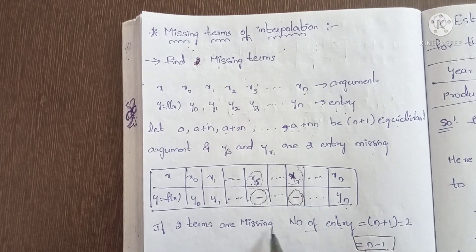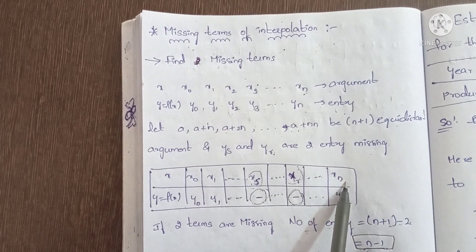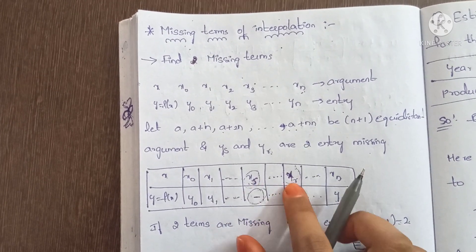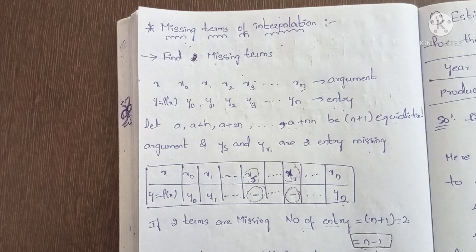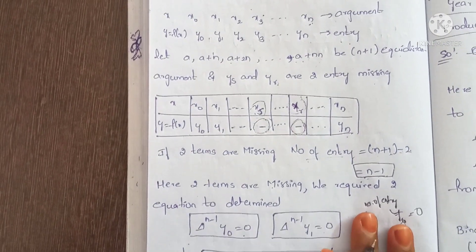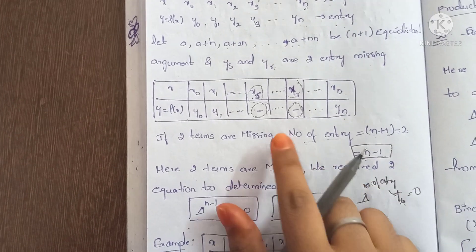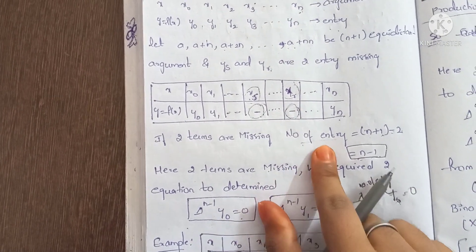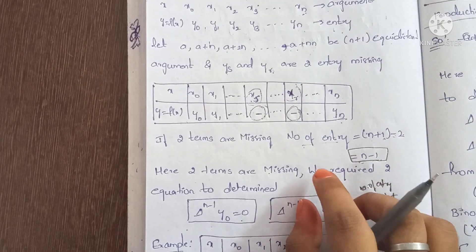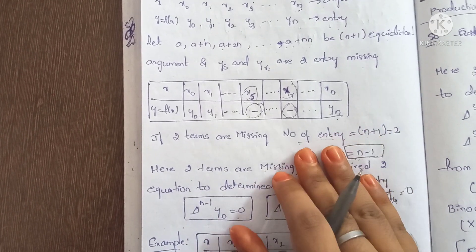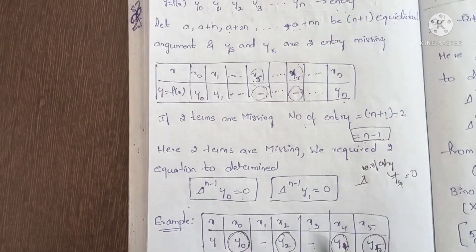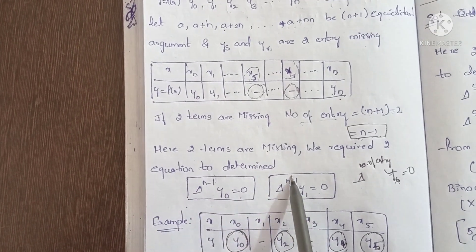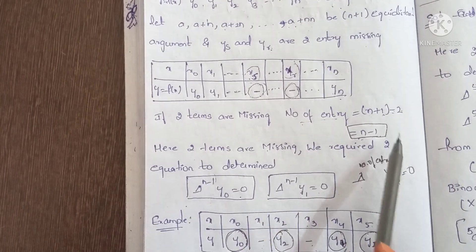If two terms are missing, the total number of entries from x0 to xn is n plus 1. Subtracting the 2 missing gives n plus 1 minus 2, so n minus 1 entries. Since 2 terms are missing, we have two equations: delta power n-1 applied to y0 equals 0, and delta power n-1 applied to y1 equals 0.